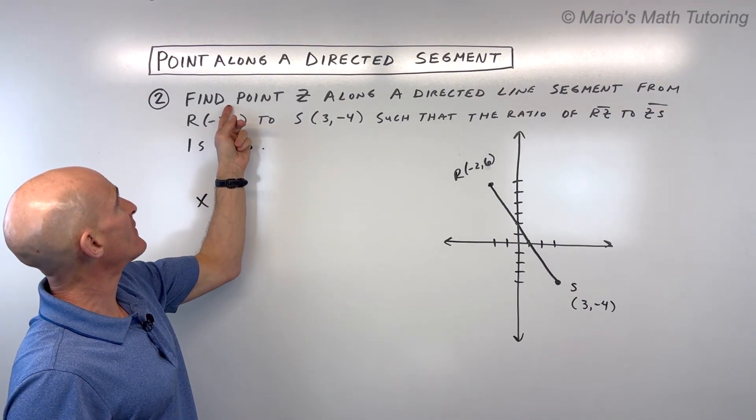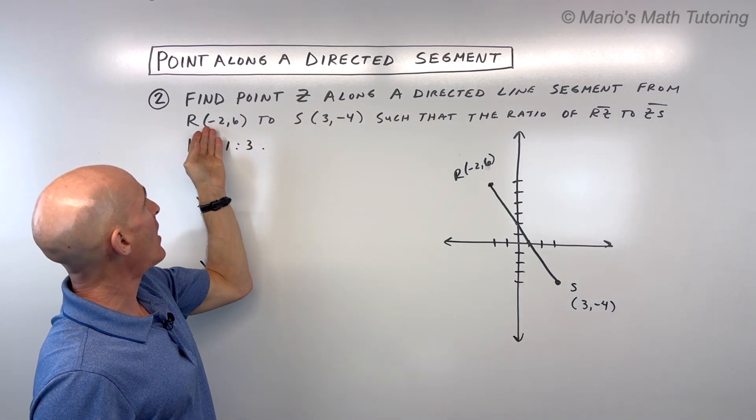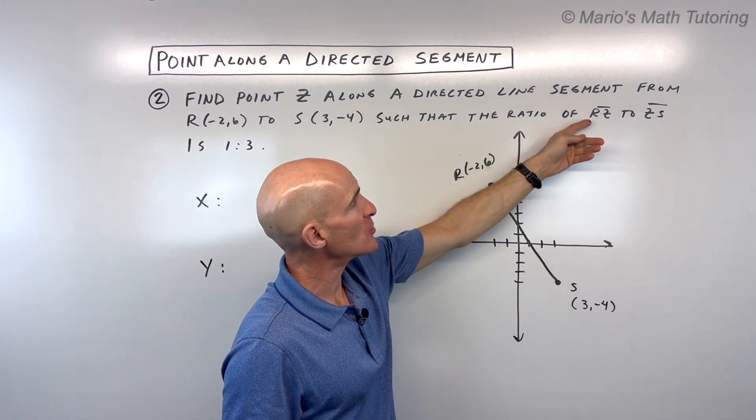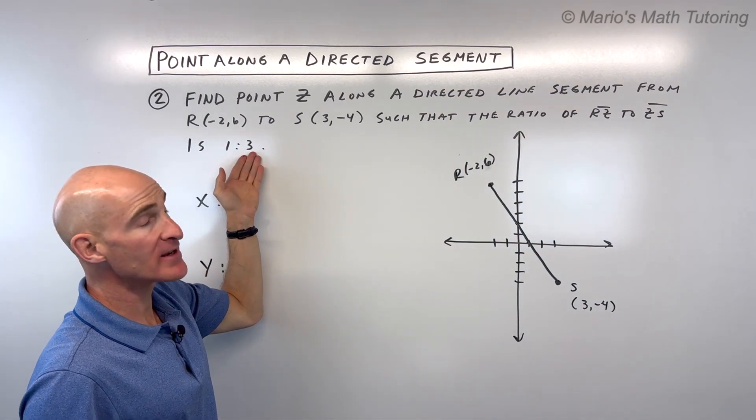Let's go through it here. Here it says, find point Z along a directed line segment from R, negative 2, 6, to point S, 3, negative 4, such that the ratio of RZ to ZS is 1 to 3.